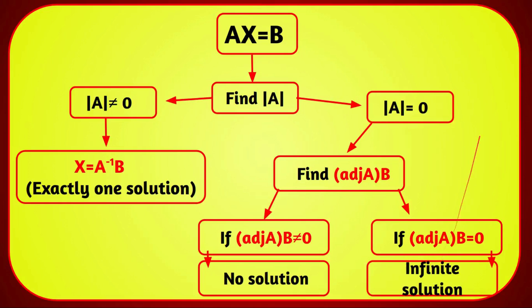To summarize the method: given the matrix equation AX = B, find the determinant of A. If det(A) ≠ 0, it has exactly one solution: X = A⁻¹B. If det(A) = 0, find adj(A)·B. If adj(A)·B ≠ 0, no solution. If adj(A)·B = 0, infinitely many solutions.